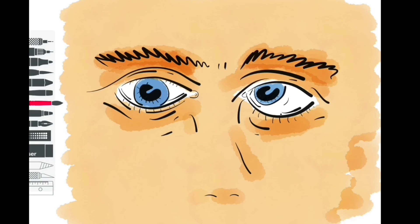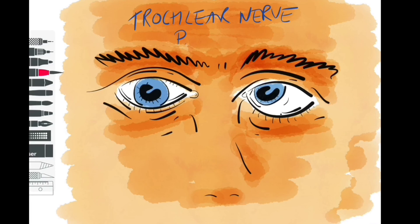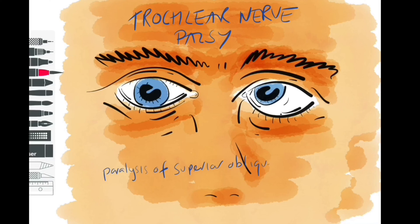Once it gets into the orbit, it supplies a single muscle, which is the superior oblique muscle. The function of that muscle is to medially rotate the eye, which is sometimes referred to as intorsion. It's involved in abduction, so it swings the eye outwards, and it's also involved in depression of the eye.